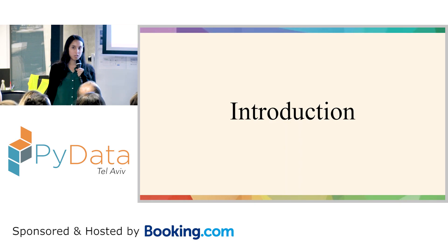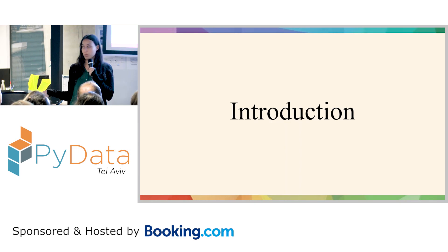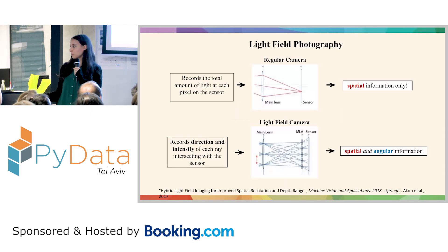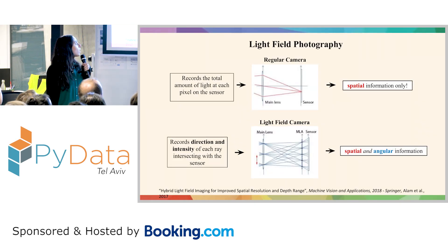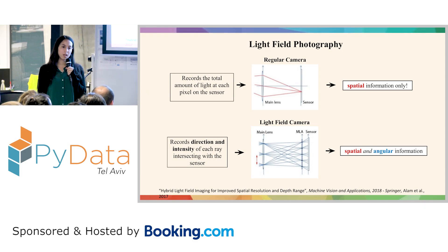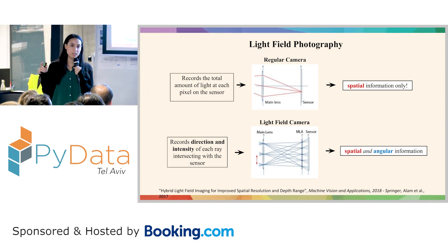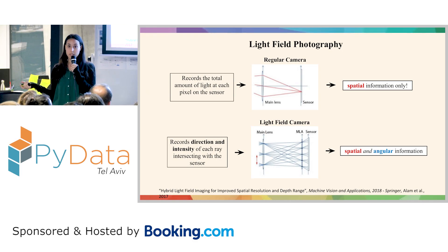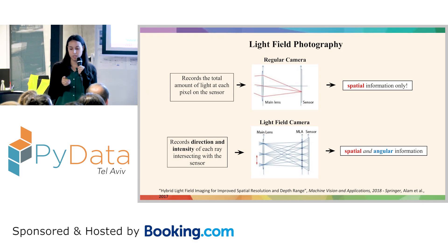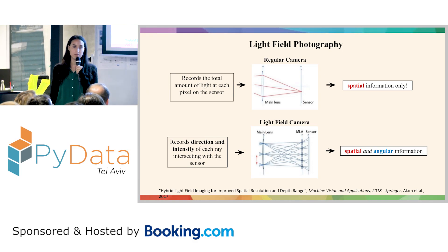I will start with a short introduction about light field photography. Regular cameras only record the total amount of light that intersects with each pixel on the sensor, and therefore they get only spatial information of a scene.